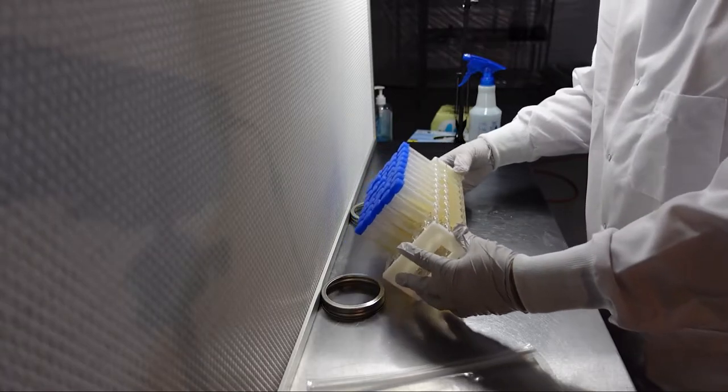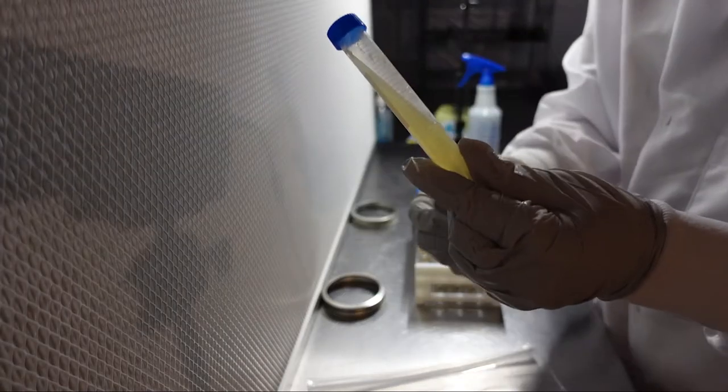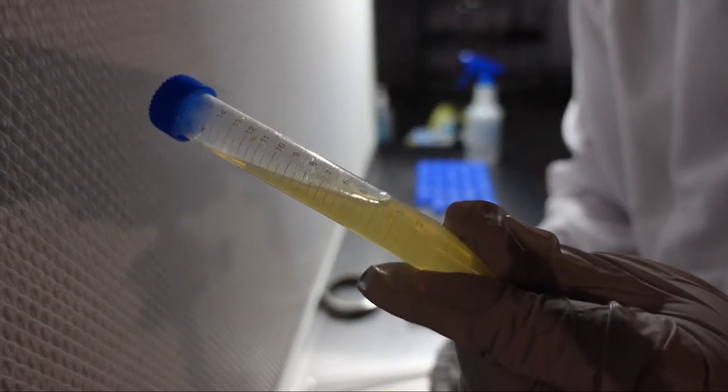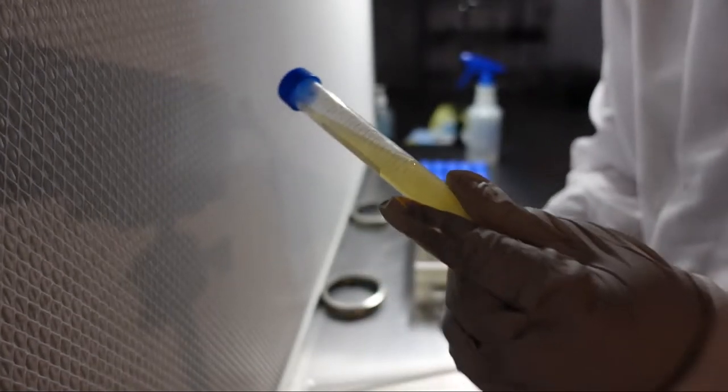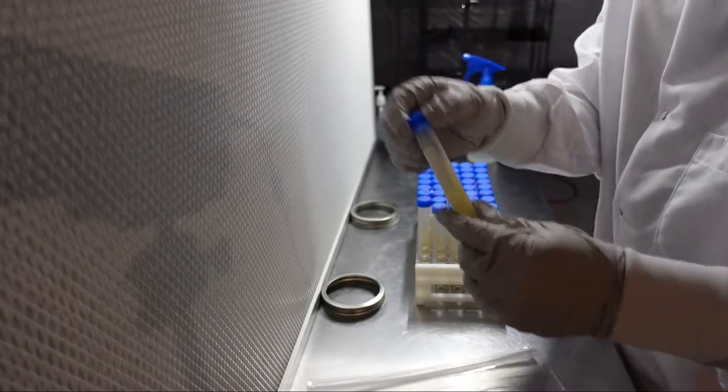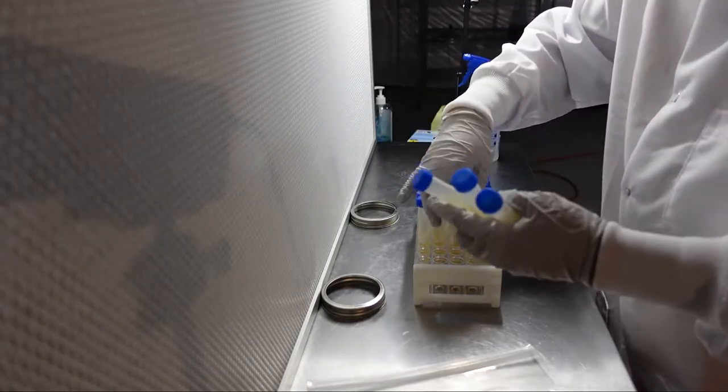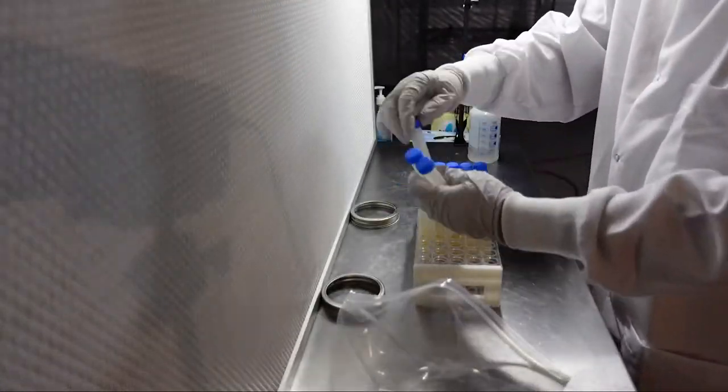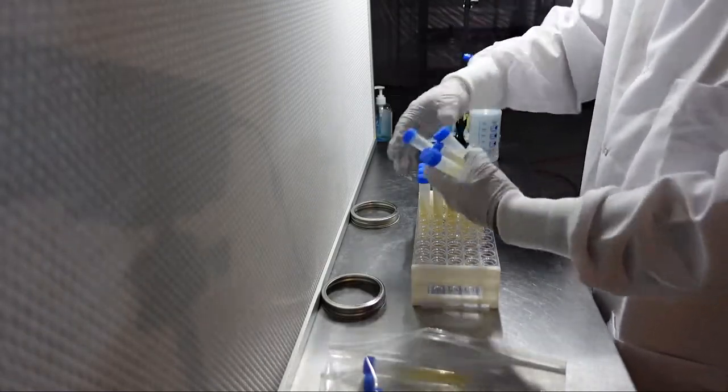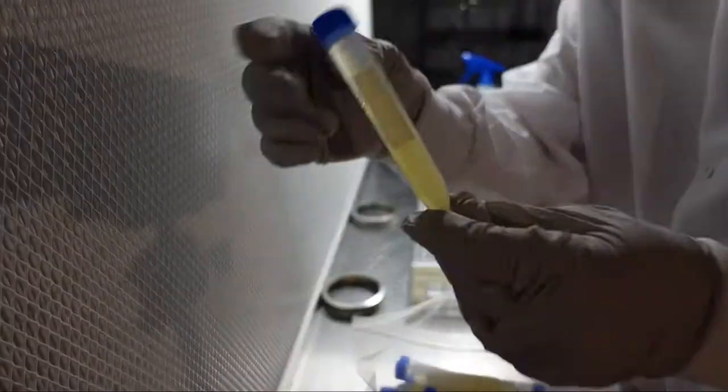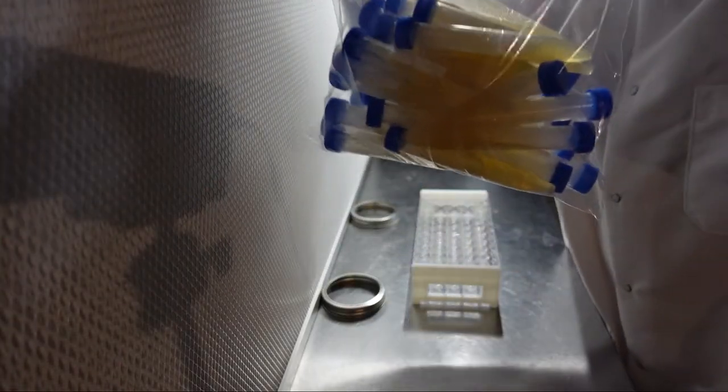Let the media cool completely in this position. When it's completely cool, you can tip your rack back over and you'll see you have nice slants with a lot of surface area for your mycelium to grow on. Now tighten all of the lids completely to keep out contamination and to keep your slants from drying out. And then place them in their original packaging or a plastic ziplock bag until you're ready to use them. You can prepare a bunch of these ahead of time and store them for months before use.